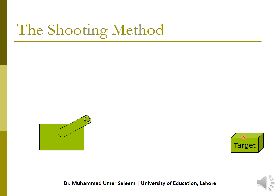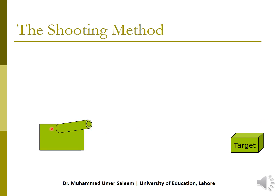We make the first try. If you look carefully, this is the path taken by the cannon's fire at this angle — it misses the target. So I change the angle and fire again. Let's see if it hits the target. It fell short of the target — it crashed before the target and did not hit it.